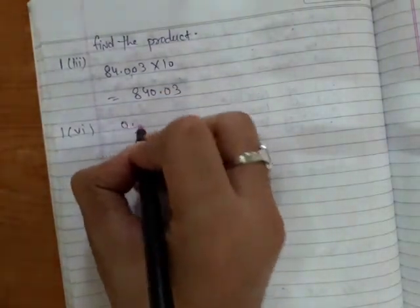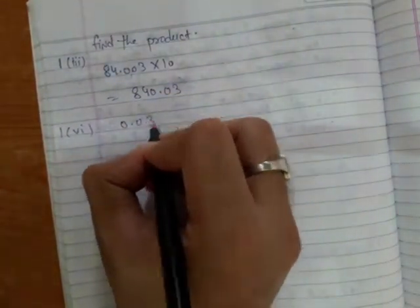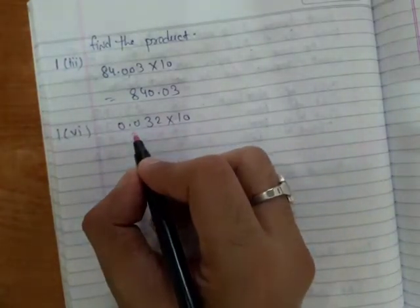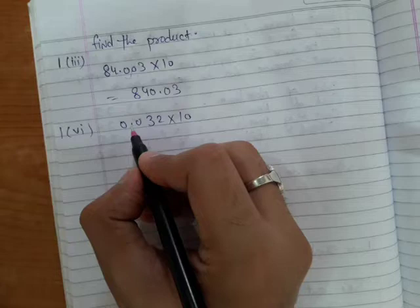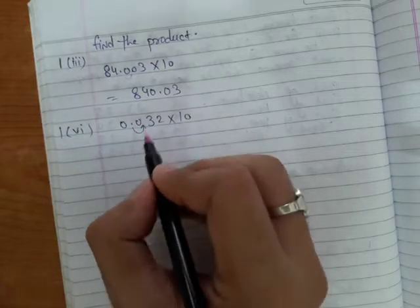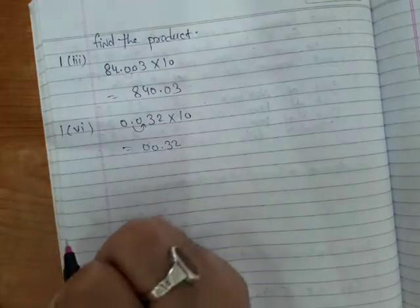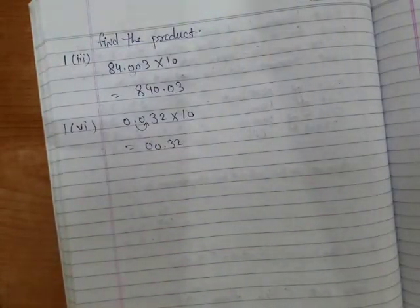In this problem, the number is 0.032 multiplied by 10. You have to multiply this number by 10, so you will shift this decimal one digit to the right side. It will come here, so it will become 0.32. This is the answer of sixth part of question number one.